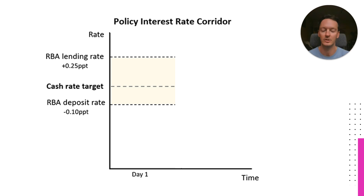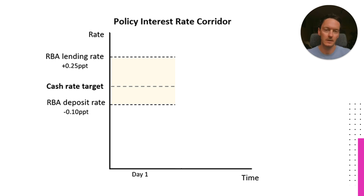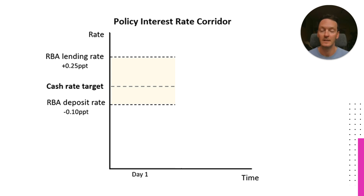That's the first point to hone in on. Remember, the cash rate target is the target price at which the Reserve Bank would like the commercial banks to exchange funds with each other. This is what you'll hear in the news — the cash rate is currently sitting at 4.25 or 4.1, whatever the number is. That's the number that the Reserve Bank would like to price money at in the money market.